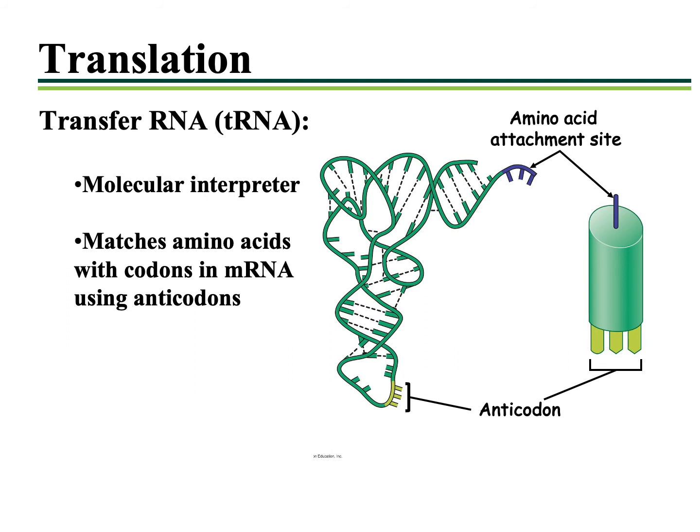Looking at this figure, you can see highlighted on both versions of the tRNA molecule something referred to as the anticodon. The anticodon is a set of three nucleotides that specifically binds to the codon in the RNA molecule. At the opposite end of the tRNA molecule is what's referred to as the amino acid attachment site. This is specifically where amino acids are covalently linked to the tRNA, because the transfer RNA molecule is going to bring those amino acids to the ribosome to allow for protein synthesis to occur.